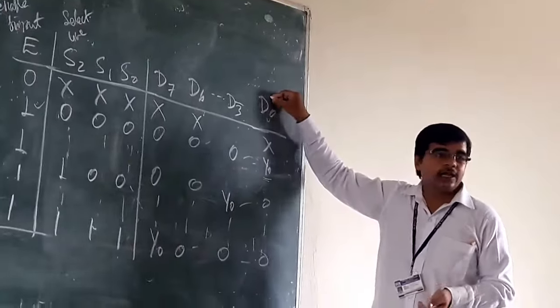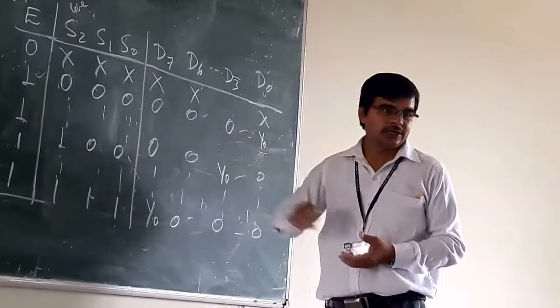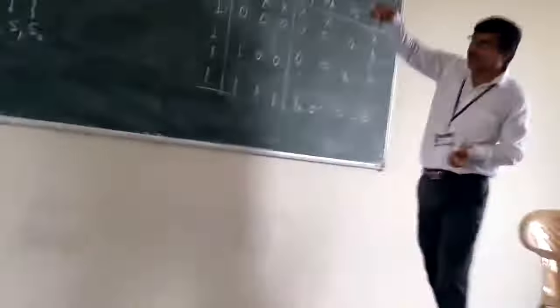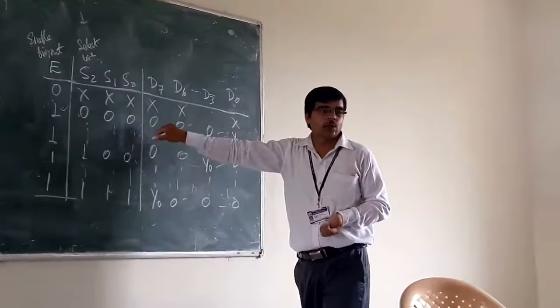At D0, you will get the output and the remaining outputs equal to 0 only. Output means whatever values you are having at the input will appear at your D0.